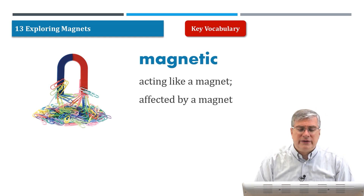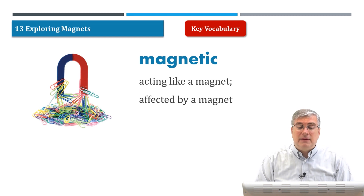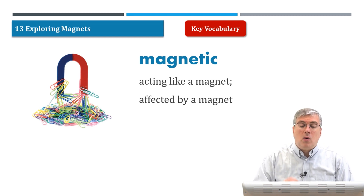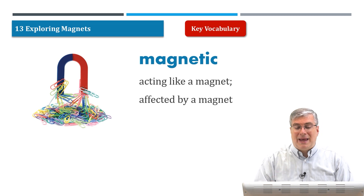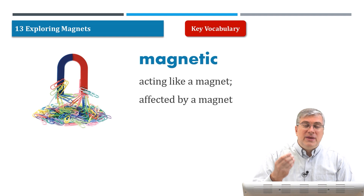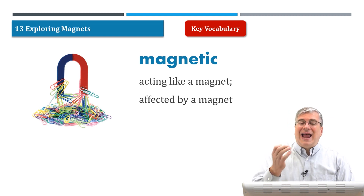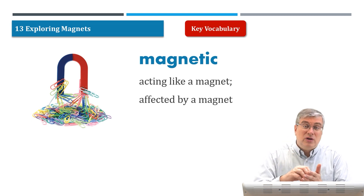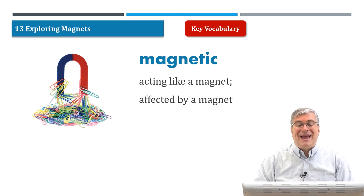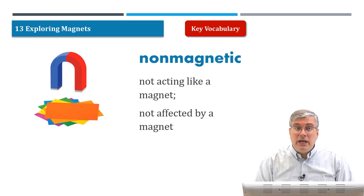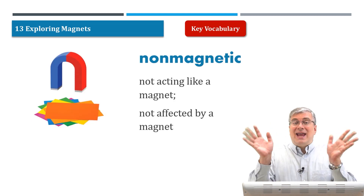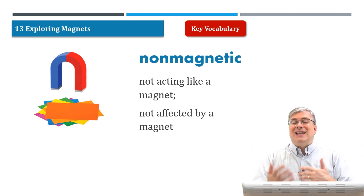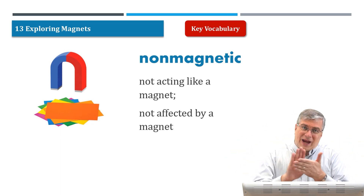Now we get into words more specific to this lesson. Magnetic means acting like a magnet or affected by a magnet. Magnetic is like a quality — if you say this metal is magnetic, it means that it acts like a magnet; it has those forces of attraction or repulsion. Non-magnetic means it doesn't act like a magnet and is not affected by magnetic forces.